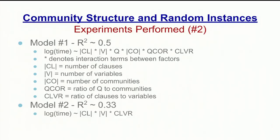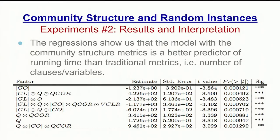The first model, which included community structure metrics, accounted for approximately half of the variability in the data. While not a particularly great result, it is significantly better than any model that has existed in the past — such as number of clauses, number of variables, and the clause-variable ratio — which only accounts for a third of the variability. In addition, every one of the most significant terms in the model either contained the number of communities or the Q value.